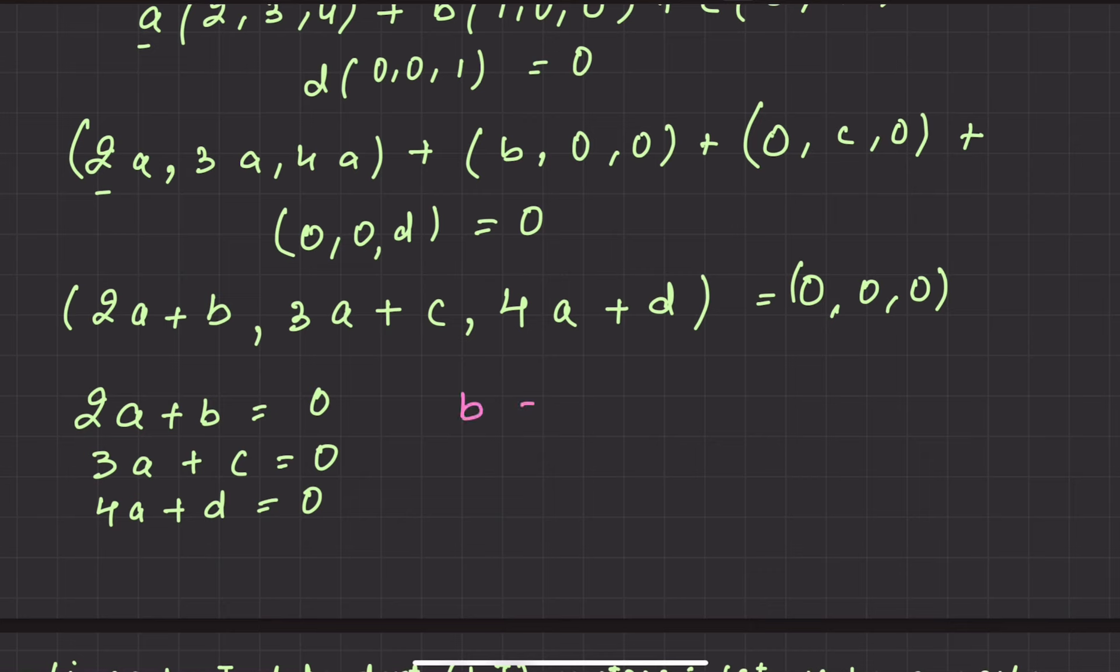The conclusion is that b I can write as minus 2a, c I can write as minus 3a, and d I can write as minus 4a. Now b, c, and d, what are all these? These are scalars.